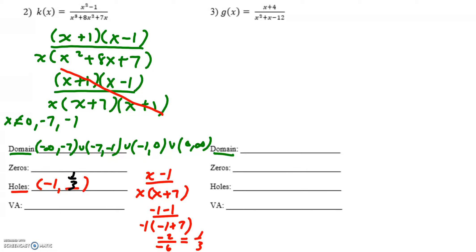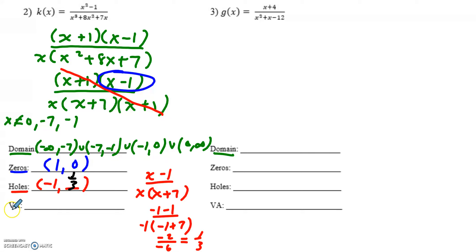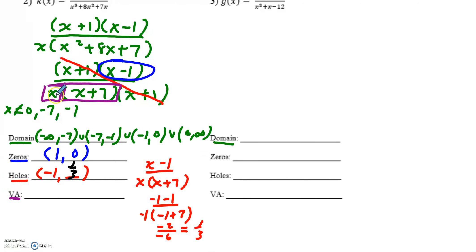After crossing out the holes, whatever is left in the numerator represents a zero — a point cannot be both a hole and a zero at the same time. So x plus one cannot be a zero, but x minus one can. My zero is at positive one comma zero. For vertical asymptotes, there are actually two: the denominator still has x and x plus seven remaining, so the vertical asymptotes are x equals zero and x equals negative seven.